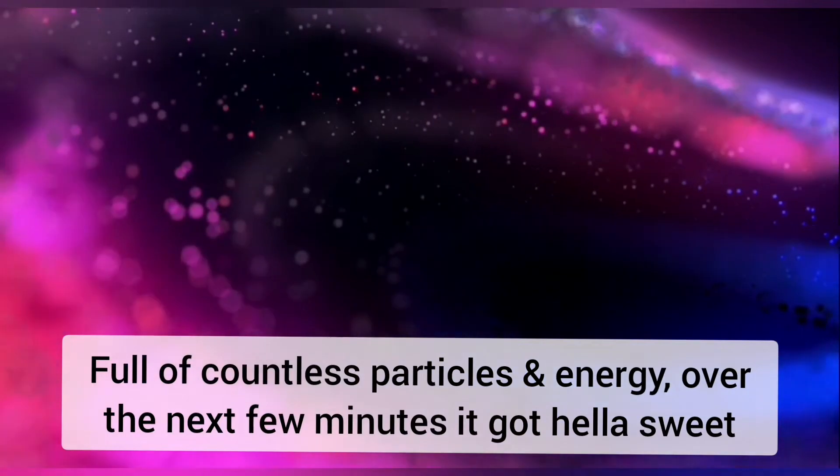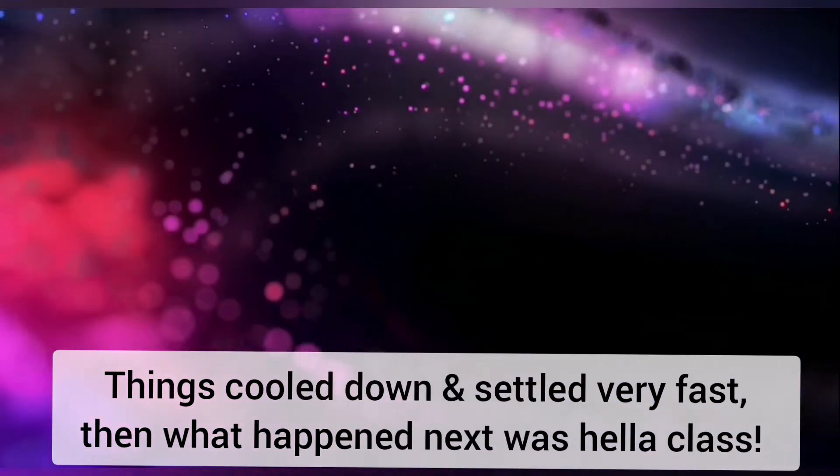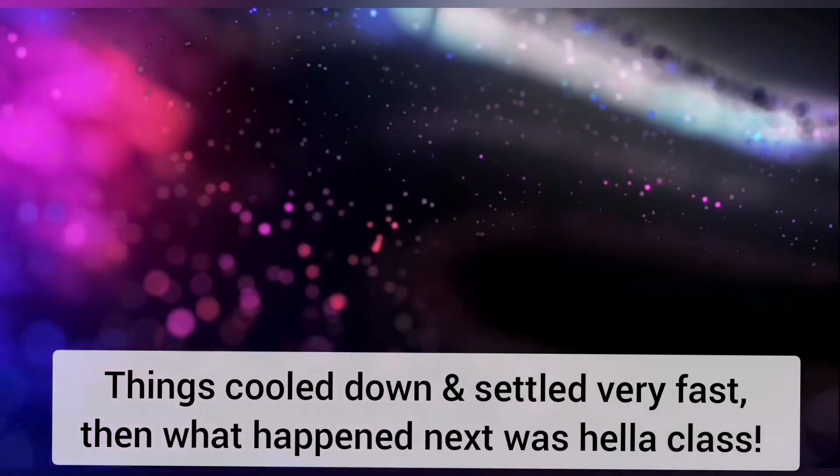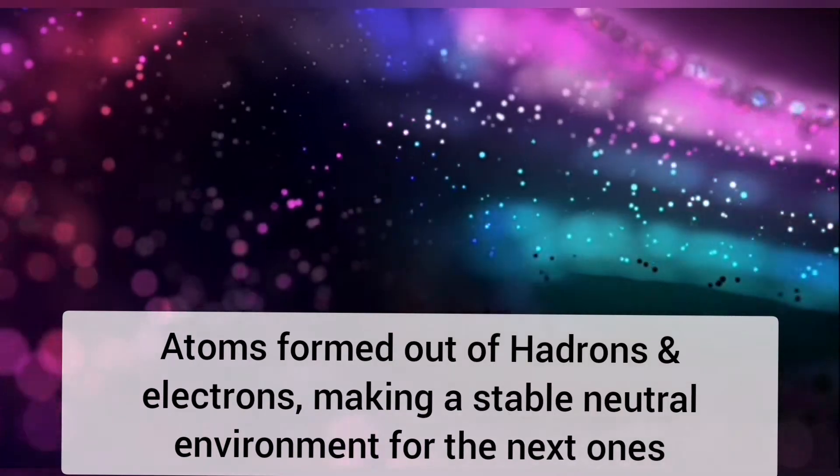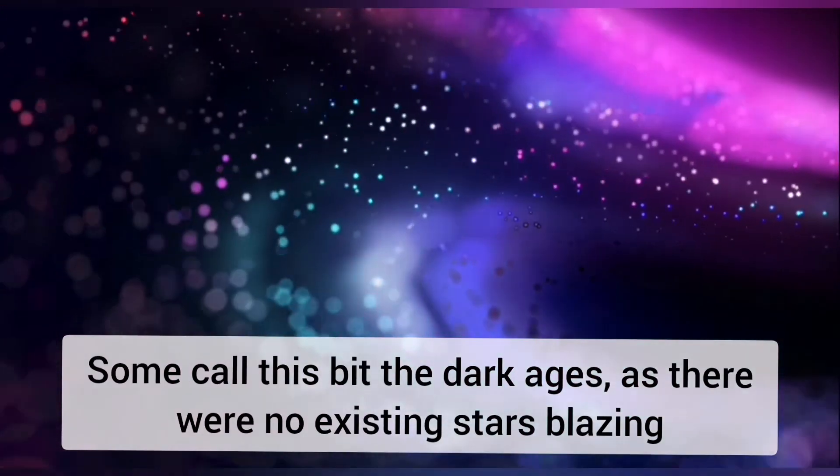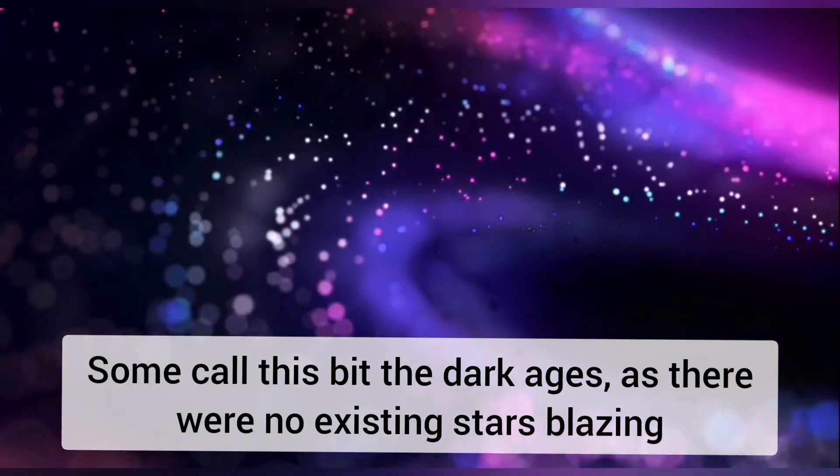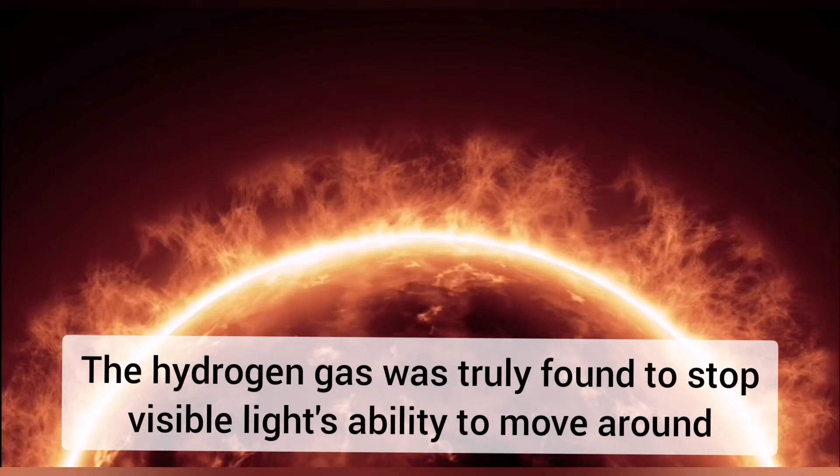Over the next few minutes it got hella sweet. Things cooled down and settled very fast. Then what happened next was hella class. Atoms formed out of hadrons and electrons, making a stable neutral environment for the next ones. Some call this bit the dark ages as there were no existing stars glazing.